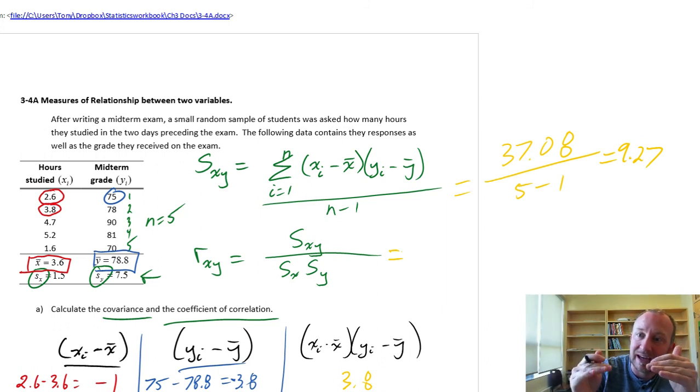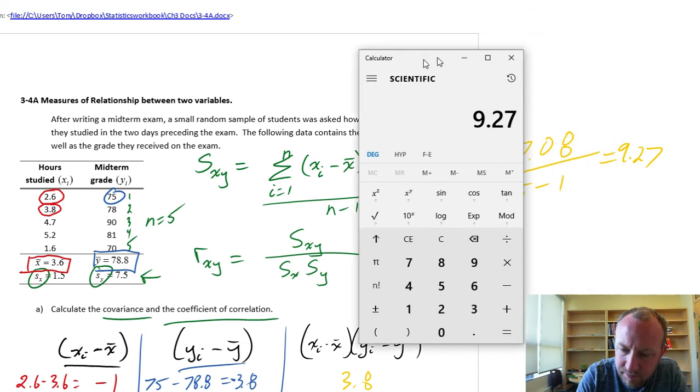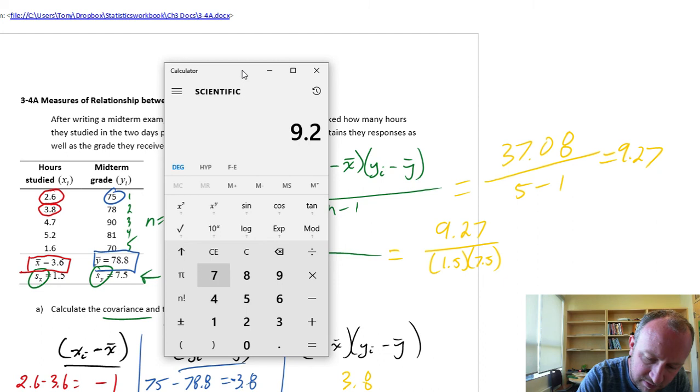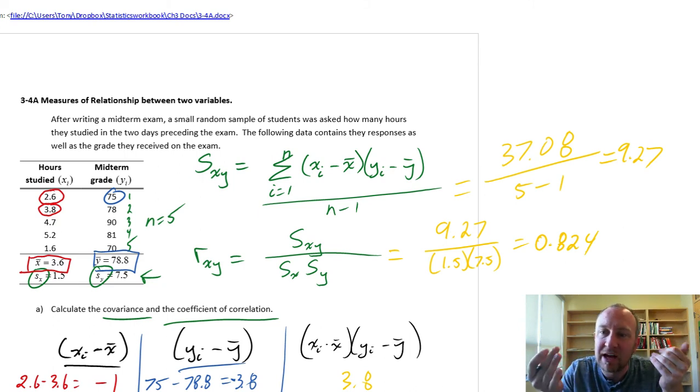So if we use the coefficient of correlation, well, this is limited between negative 1 and 1. From perfectly negative to perfectly positive. So this makes it a little bit easier to sort of interpret and to grasp the strength of that relationship. So here I have my covariance. We just calculated 9.27 divided by the product of my sample standard deviations. So that's 1.5 times 7.5. So let's get the calculator again. So that's 9.27 divided by, I'm just going to use brackets here, 1.5 times 7.5. So that is 0.824.